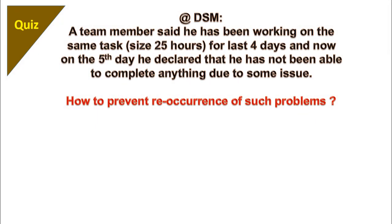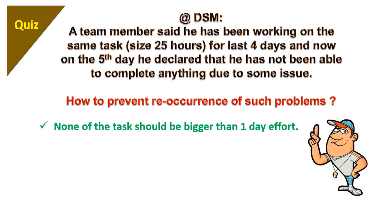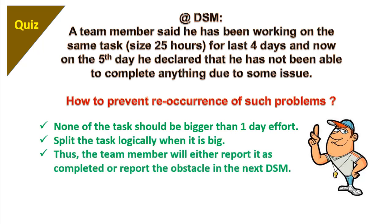Next question: a team member has been working on the same task for the last 4 days. The task size was 25 hours, and now on the fifth day he declared that he has not been able to complete anything due to some issue. How to address such problems? None of the tasks should be bigger than one day's effort. Split the task logically if it is bigger than that. Thus the team member will either report it to be completed or report the obstacle in the next daily standup meeting. Fail fast, fail cheap.